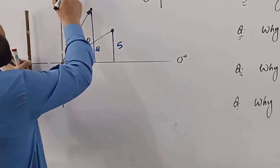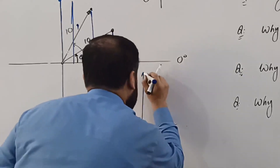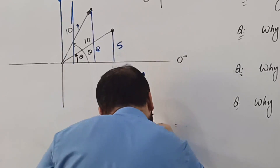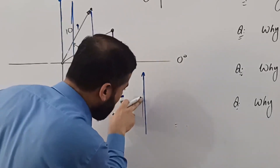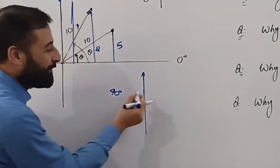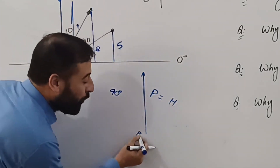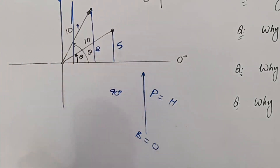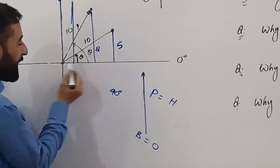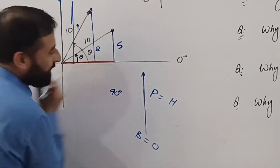A time will come when the stick will be totally vertical. Now in this particular position, which is 90 degrees, hopefully you can see it — it is totally straight, exactly straight. Now it is making a 90 degree angle. In this particular position, perpendicular and hypotenuse become equal, but base vanishes. There is no base in this particular position. For this angle, this is perpendicular and this red part is the base.